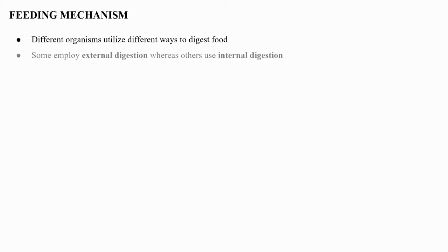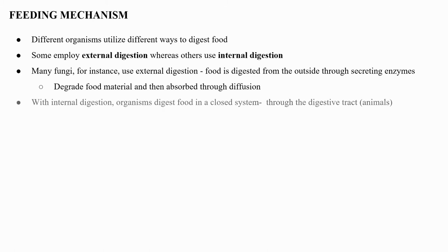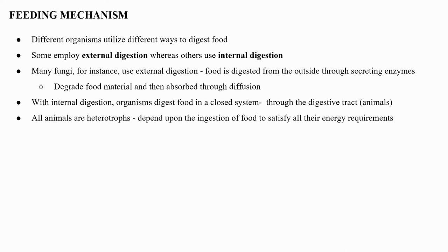Different organisms utilize different ways to digest food. Some organisms employ external digestion whereas others use internal digestion. Many fungi use external digestion, secreting enzymes that degrade food material and then absorbing it through diffusion. With internal digestion, organisms digest their food in a closed system such as a digestive tract, as in many animals. All animals are heterotrophs that depend upon the ingestion of food to satisfy their energy requirements.